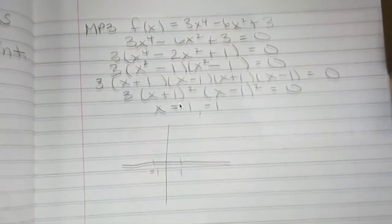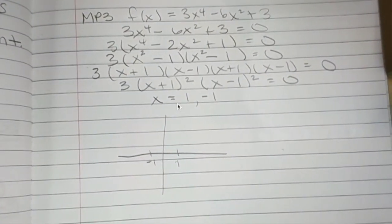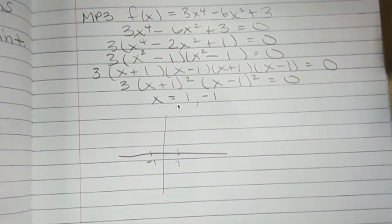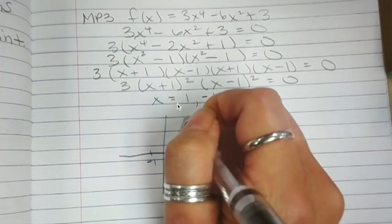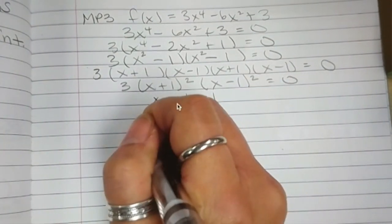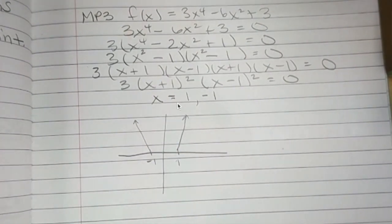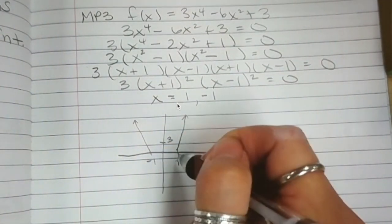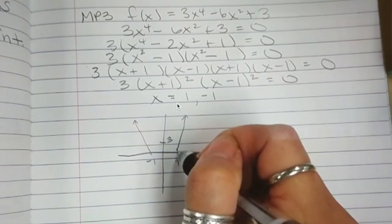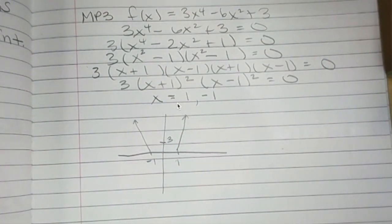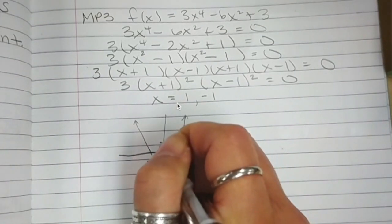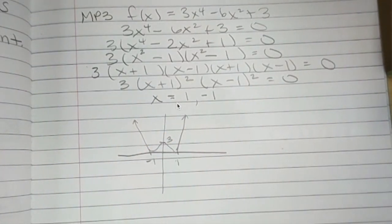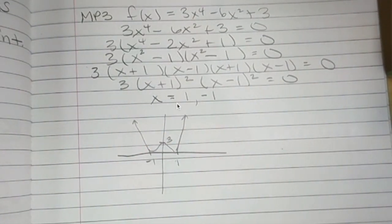Okay. What's my end behavior? Both of them going up. Good. So, you know they both go up. Okay. What is my y-intercept? 3. Now. Does it go through 1? Or is it going to bounce off of 1? It's going to bounce off of it. Touch it. Go back up. Touch this 1. Go back up. That's it. Rough sketch.